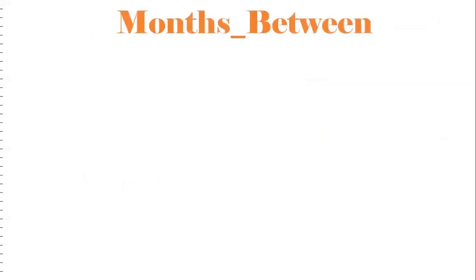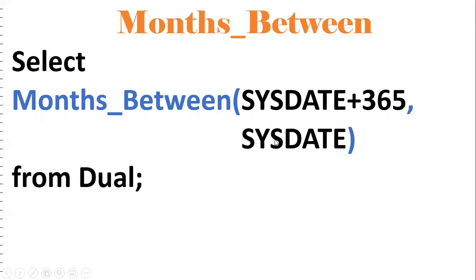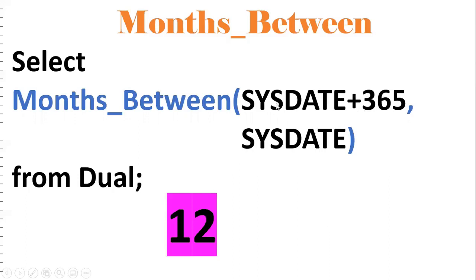Now, MONTHS_BETWEEN. The main purpose of MONTHS_BETWEEN is to give the number of months between two dates. We need to pass two dates as parameters — a starting date and an ending date. It will return the number of months between those two dates. If the result is positive it gives a positive value; if negative, it gives a negative value. This is the MONTHS_BETWEEN concept.